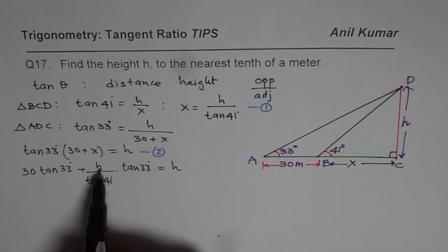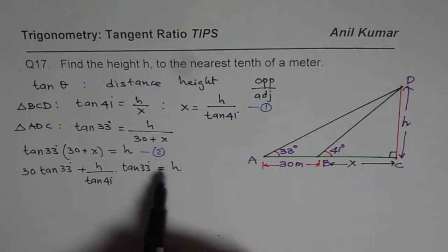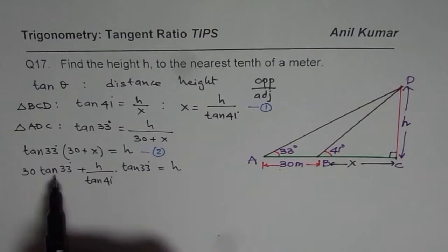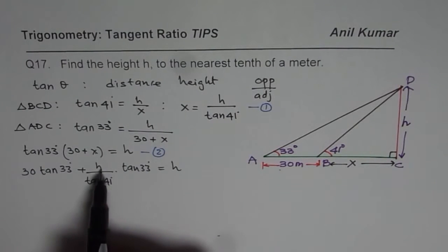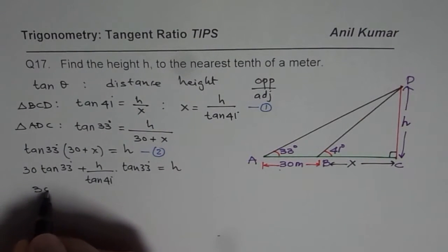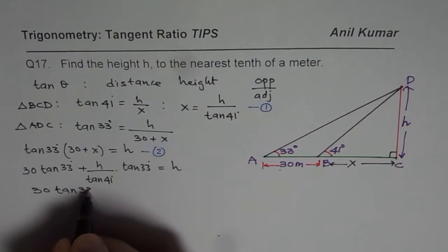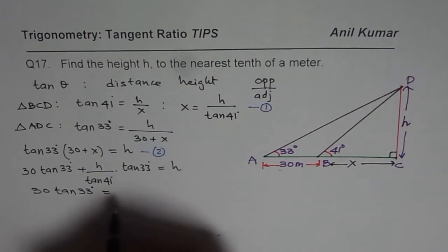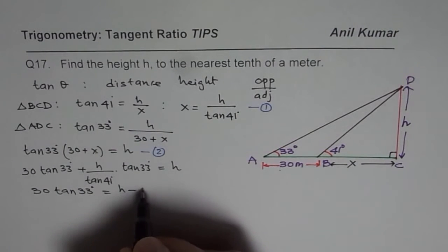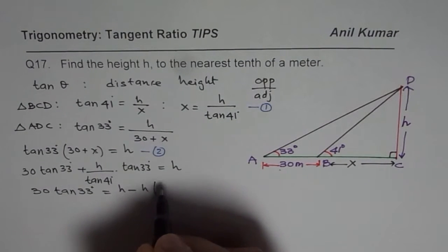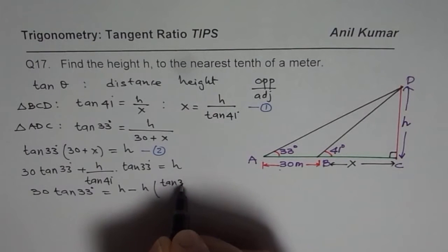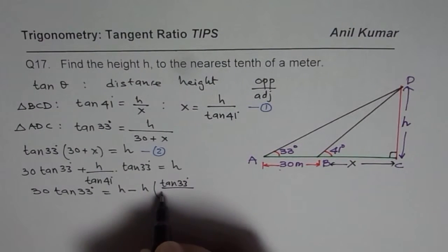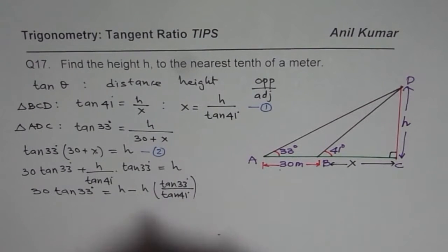Now we can see here that we have a term in h. I can bring this term to the right side and find the value of h. So I can write 30 tan 33° equals h minus (h tan 33°)/(tan 41°). Now tan 33° or 41° is just a number.